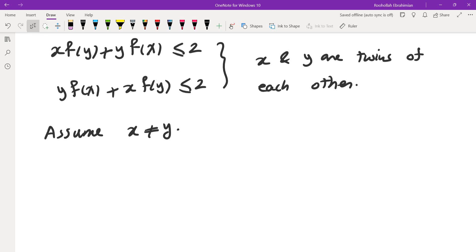If that's the case, it means x is not a twin of itself. So it means if you plug in x and y to be the same, this quantity cannot be less than or equal to 2, which means it must be more than 2. And that tells us that f(x) must be more than 1 over x.